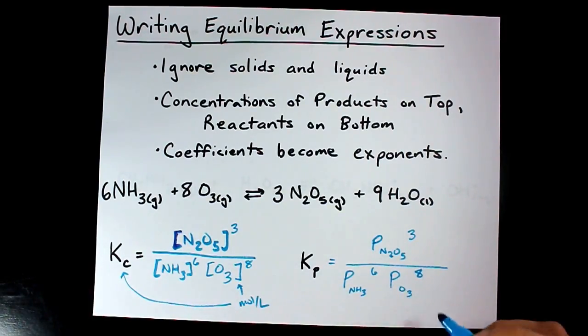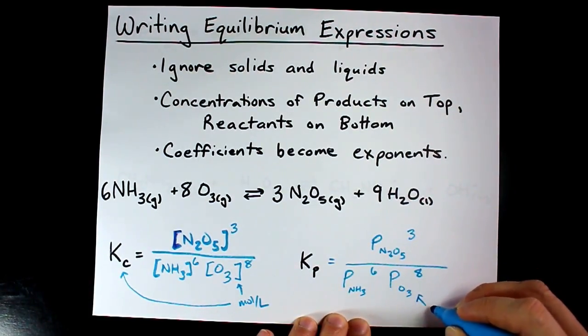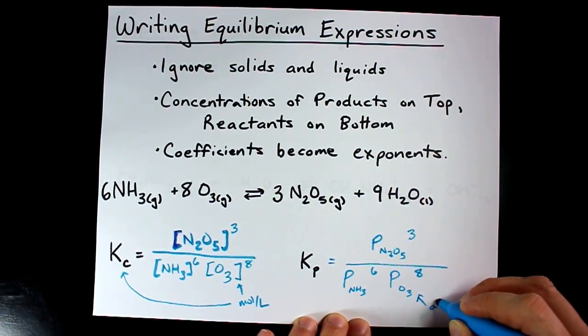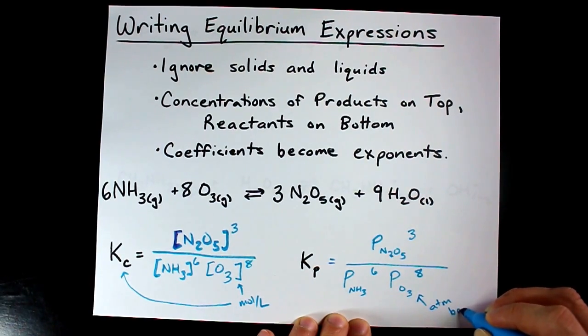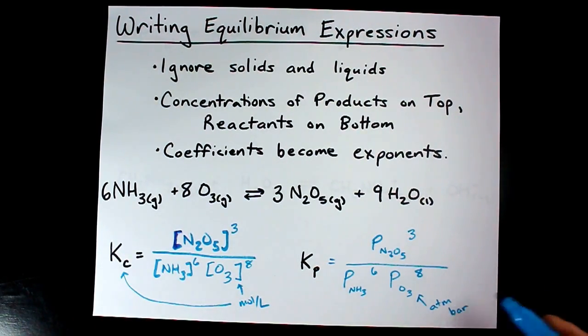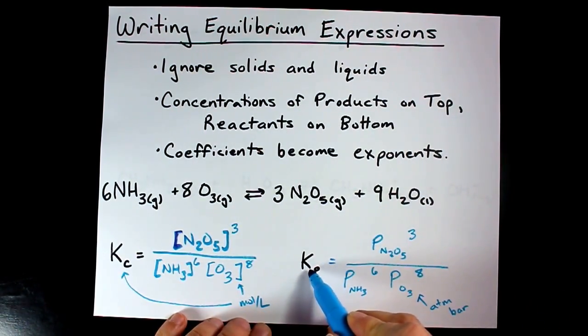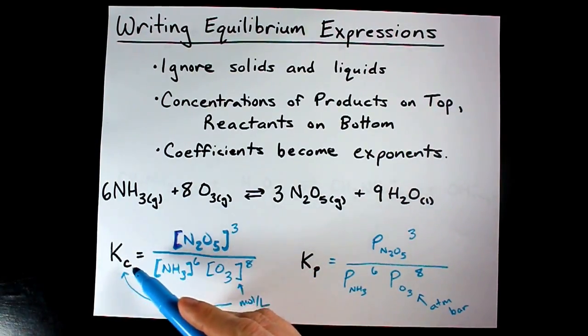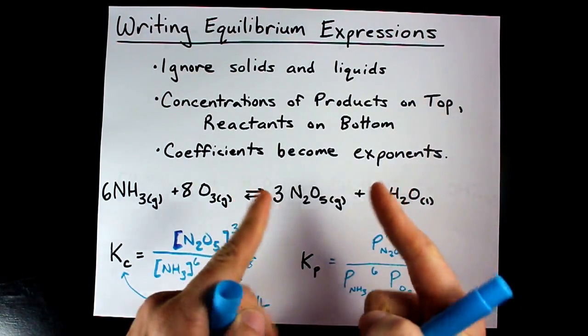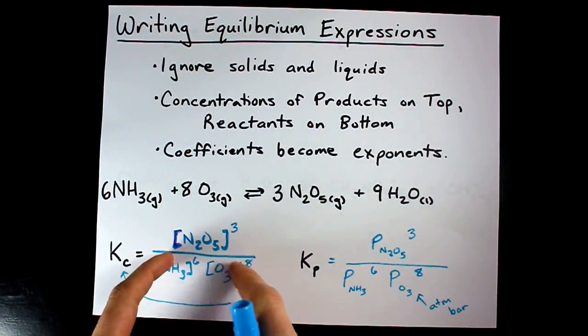It looks the same except these numbers need to be in, oh boy, I can't remember if it's ATMs or bars. You'll have to look it up or use whatever your teacher wants. I have a feeling people who do metric do this another way. Anyways, Kp is for pressures, Kc is for concentrations, and if your teacher calls it Keq they're probably looking for this one.